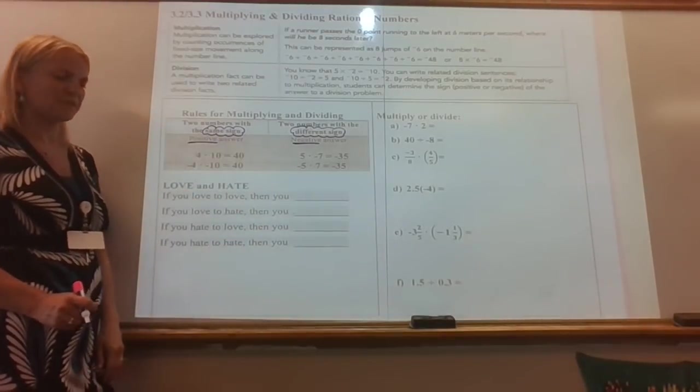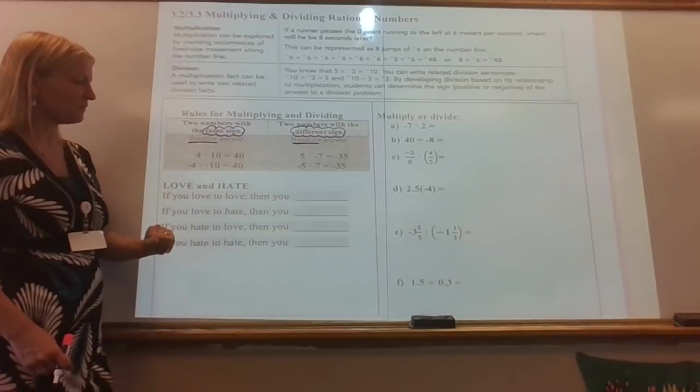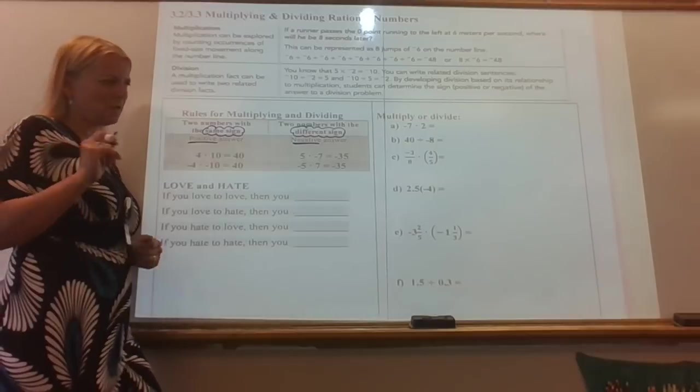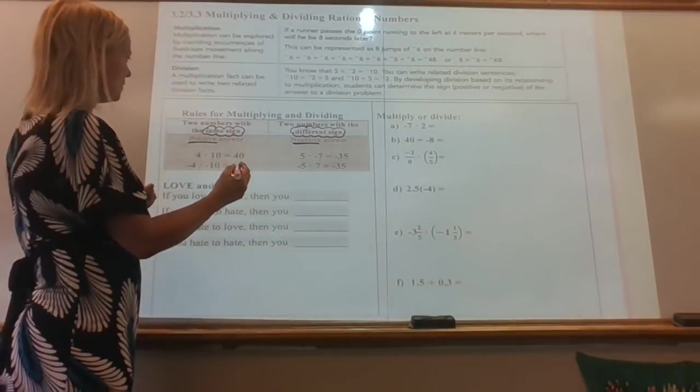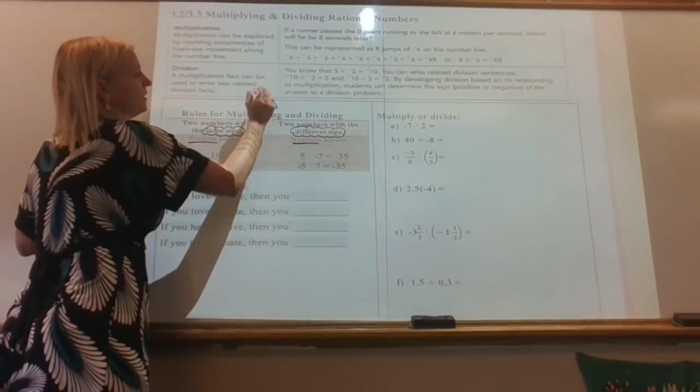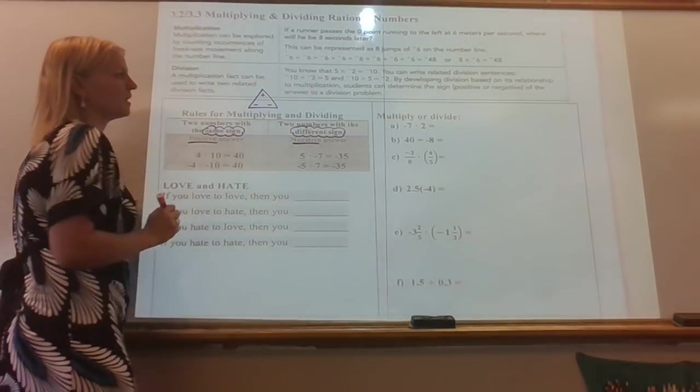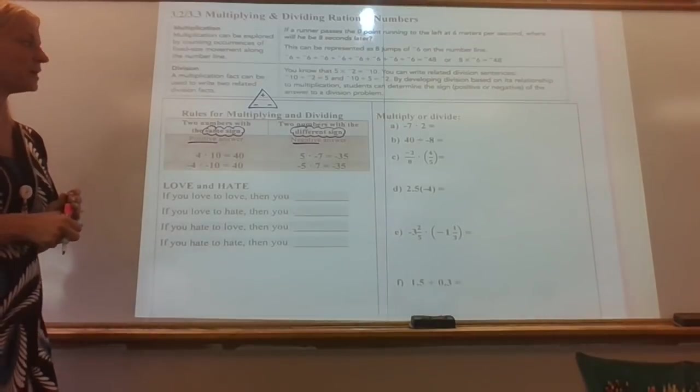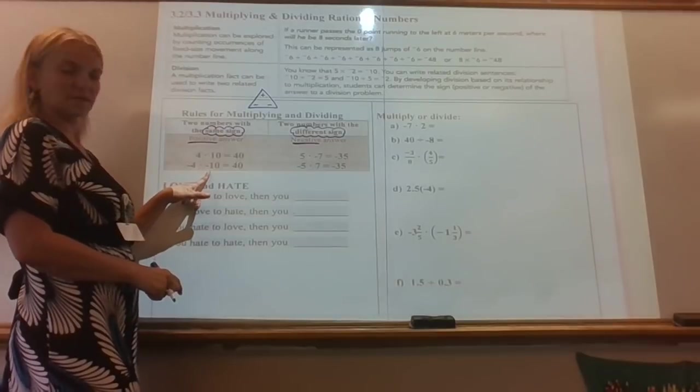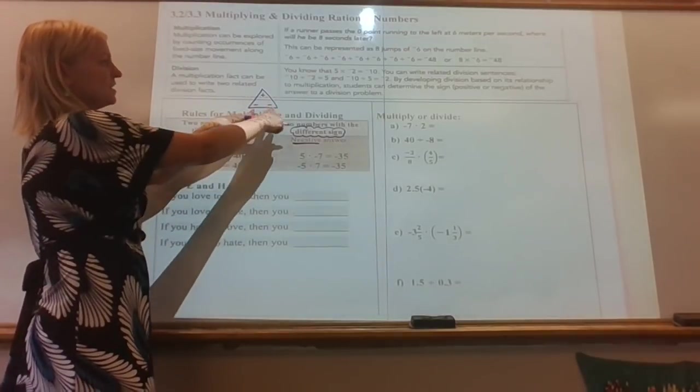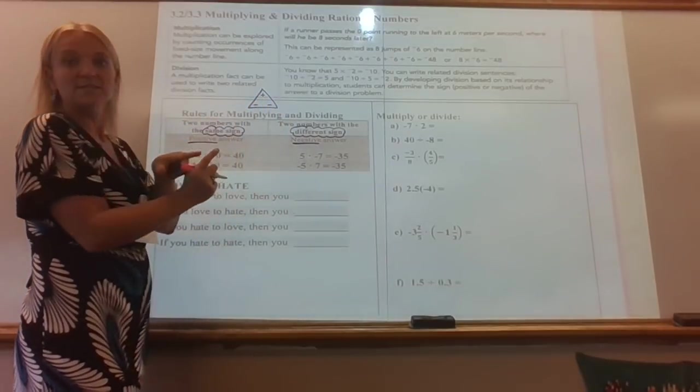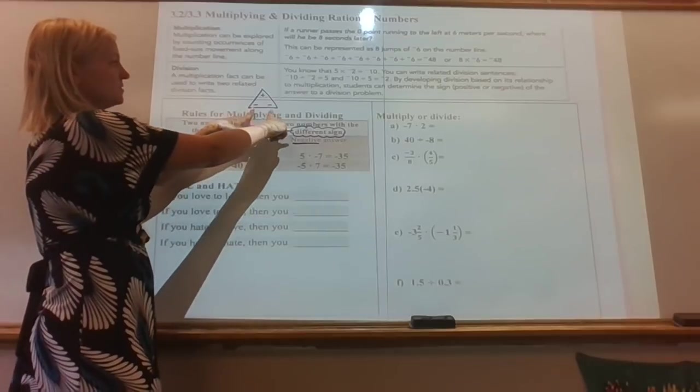Now there might be a couple things that you've used in the past that might help you with multiplying and dividing. Some of you might have learned what I think sometimes we call the doctor triangle. It's a little triangle that we can use. In the triangle, we put a plus on the top and then two negatives. How people use this with multiplying and dividing is whatever two things we're multiplying.